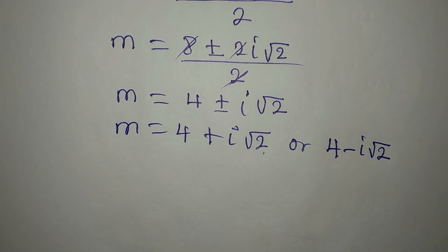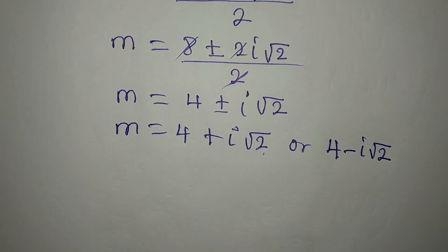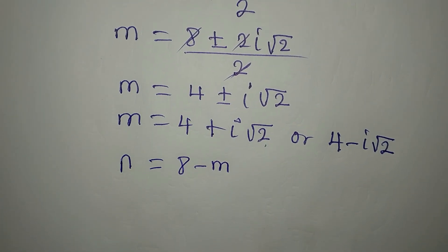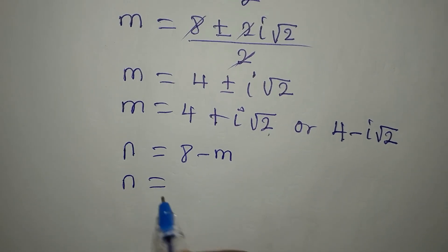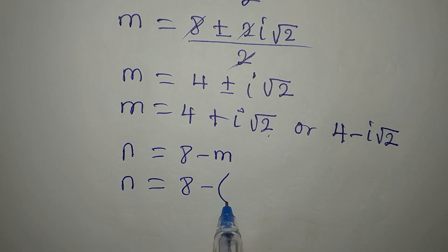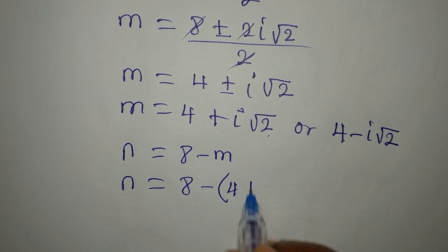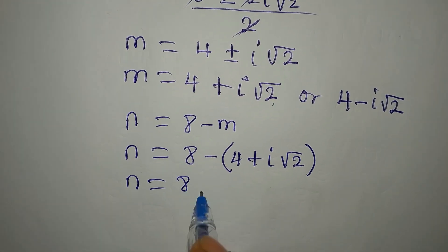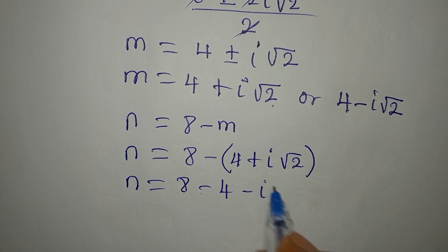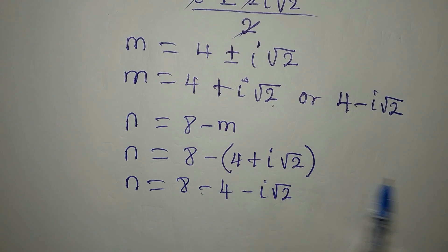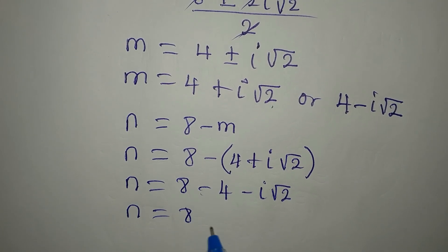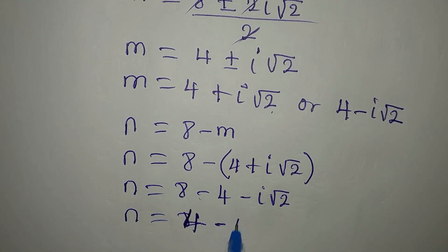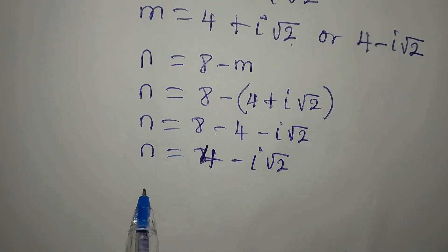These are the two values of m, but we still need to get the value of n. From equation 3, n equals 8 minus m. Substituting the first value: n equals 8 minus bracket 4 plus i root 2. Opening the bracket: n equals 8 minus 4 minus i root 2, so n equals 4 minus i root 2.